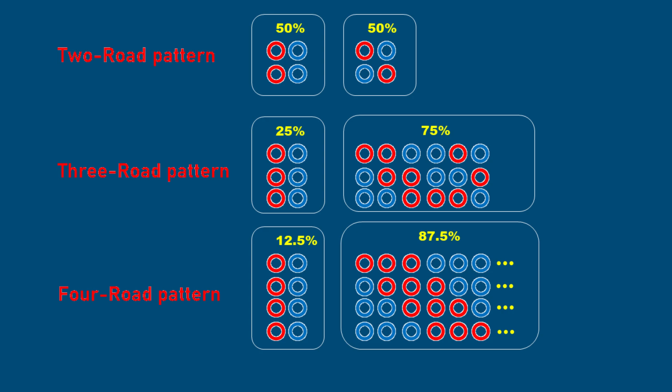Finally, there is the four-road pattern, which has 16 possible outcomes. By this point, the probability of consecutive wins has dropped to 12.5%, while the probability of mixed results has risen to 87.5%. This demonstrates that long streaks are statistically unlikely, and irregular patterns dominate the game. This insight is crucial for informed betting: long streaks are rare, and non-consecutive patterns are far more common.